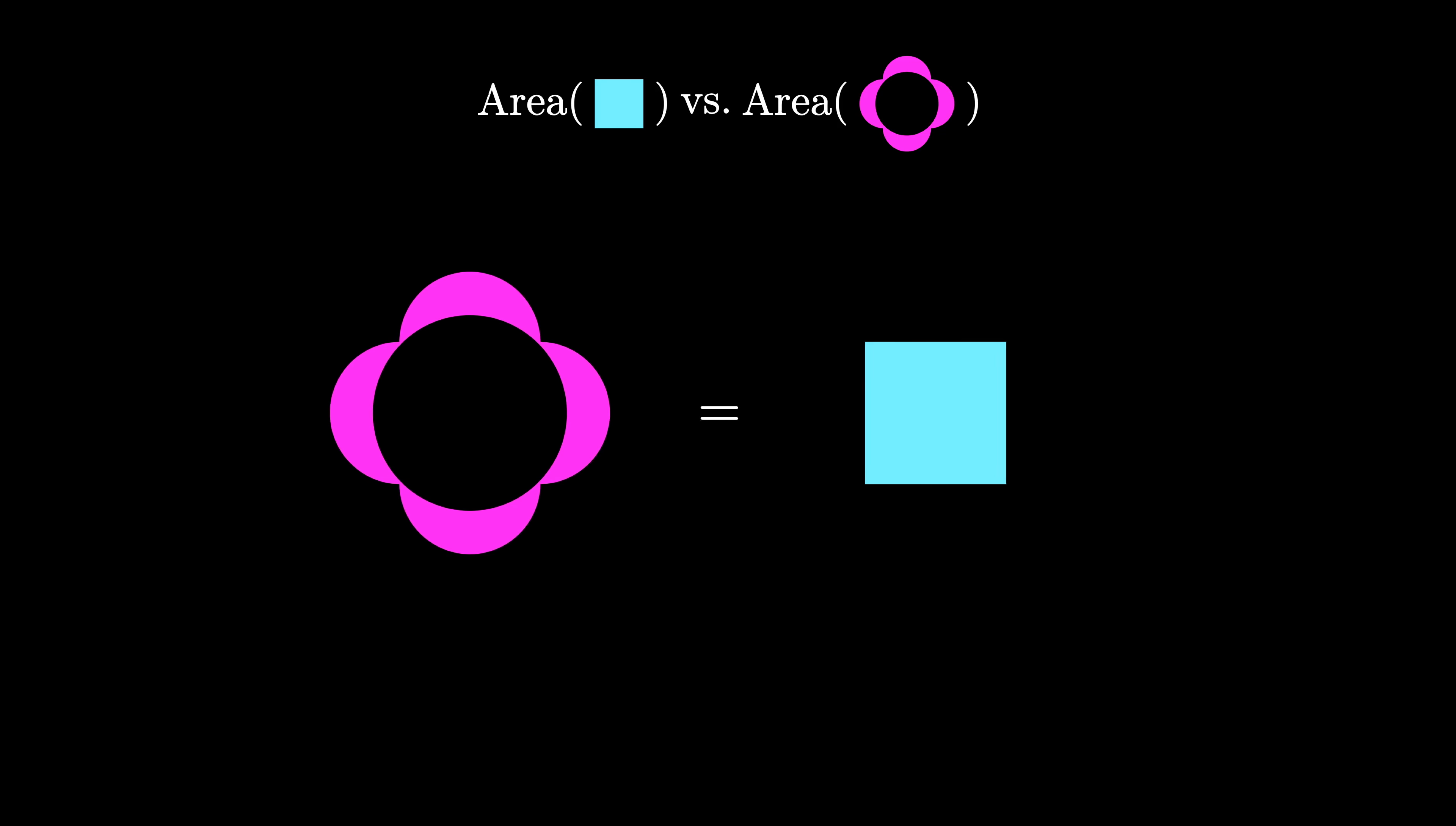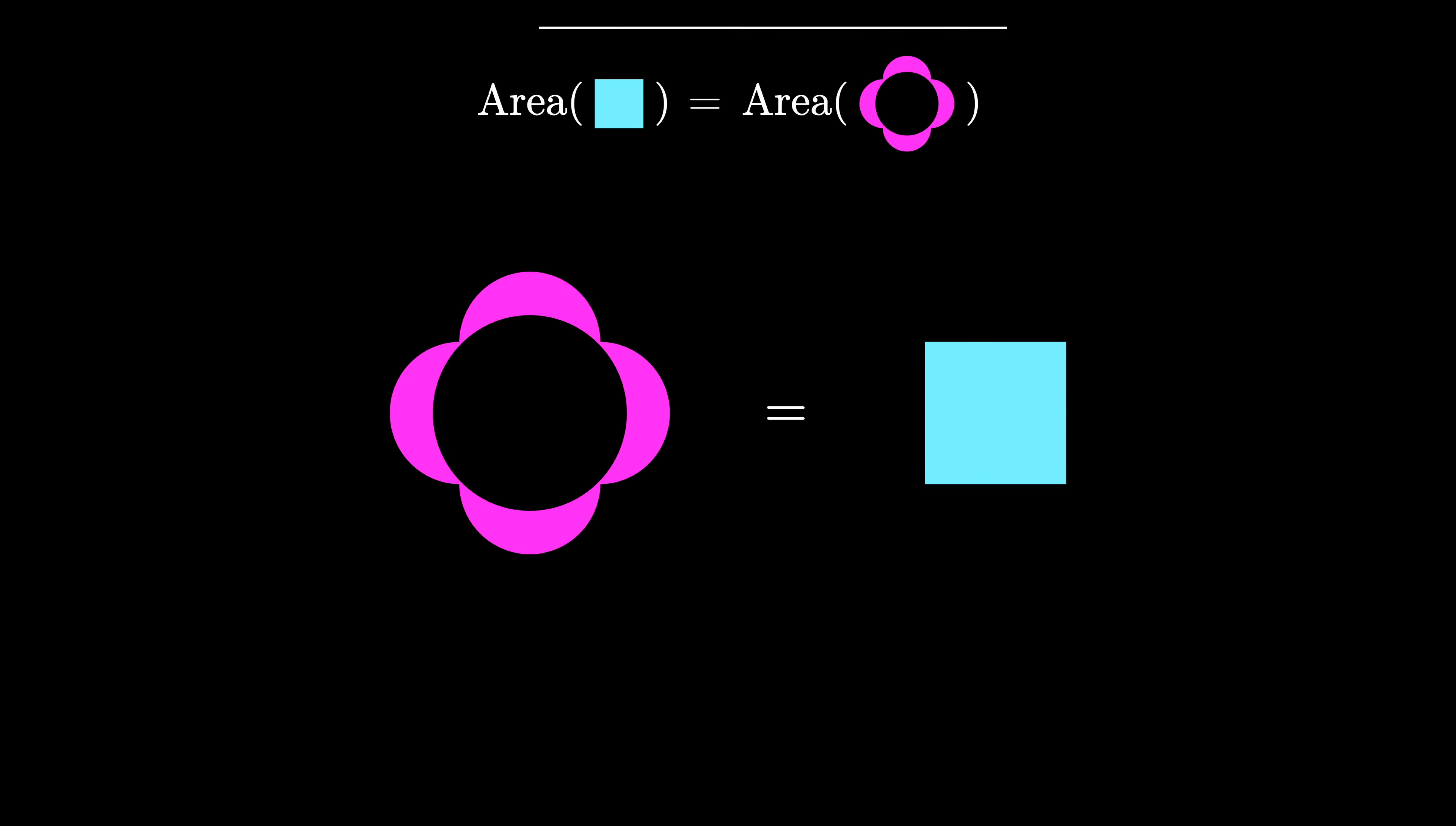Therefore, we've seen that the area of the four lunes is equal to the area of the inscribed square.